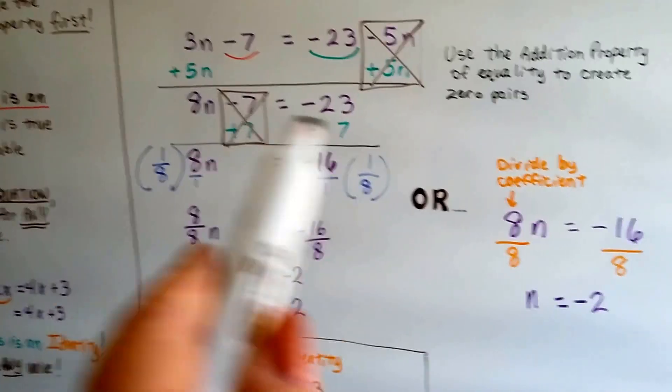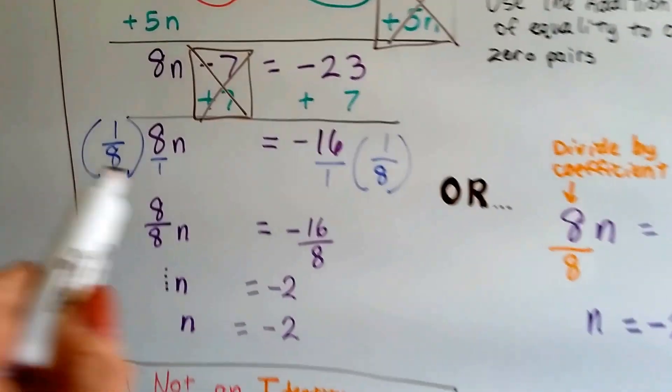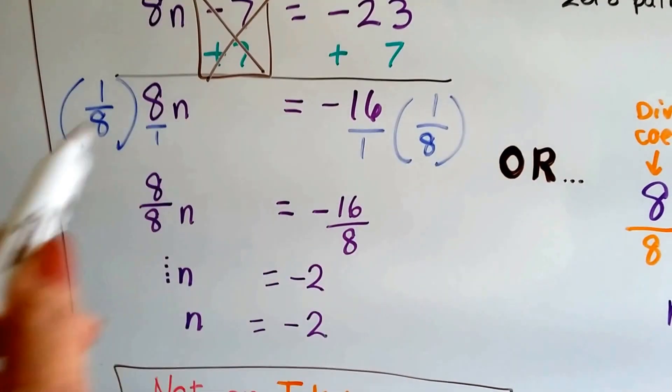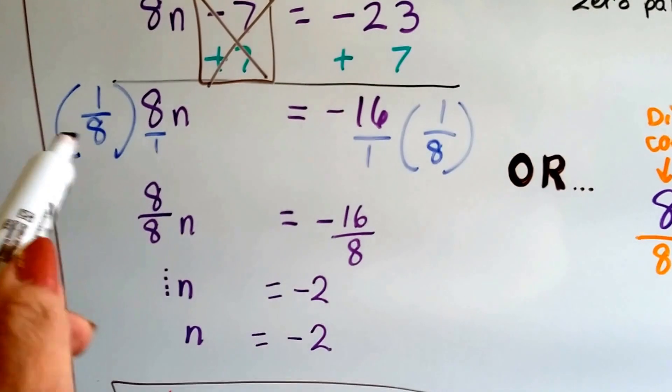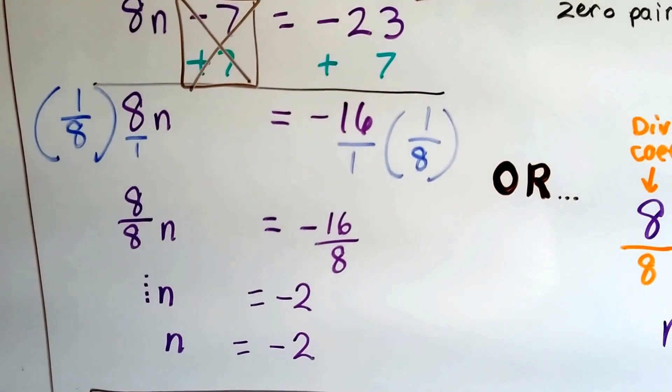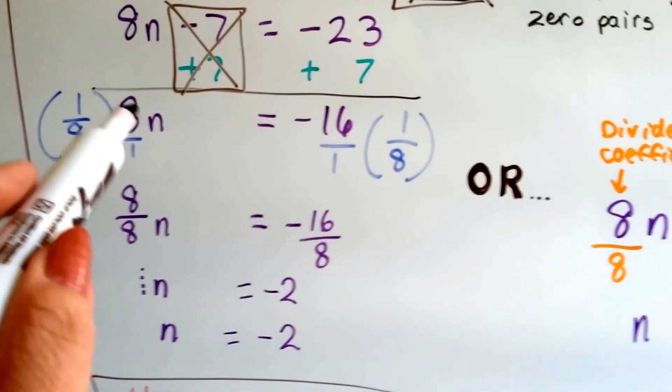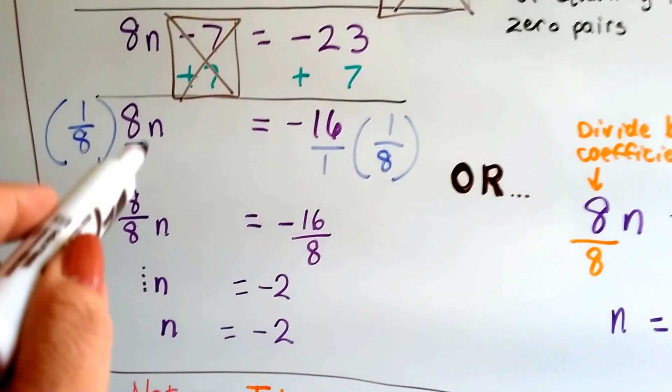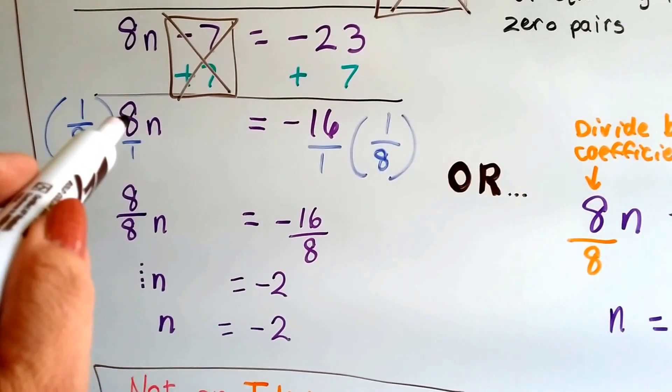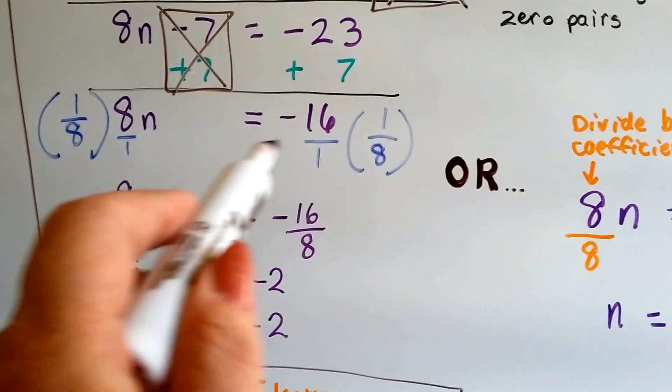Now, we did this by using the multiplication property of equality and multiplying the coefficient by its reciprocal right here. I know people hate all those big math words. So we multiplied both sides by the flipped upside down version of this 8 that's next to the variable, which is a 1 eighth.